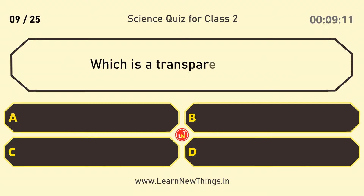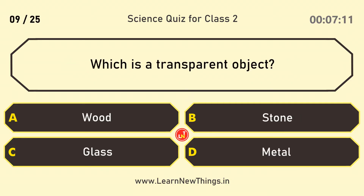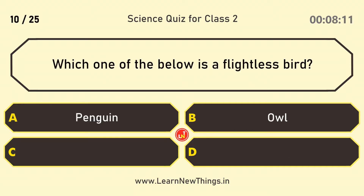Which is a transparent object? Glass. Which one of the below is a flightless bird? Penguin.